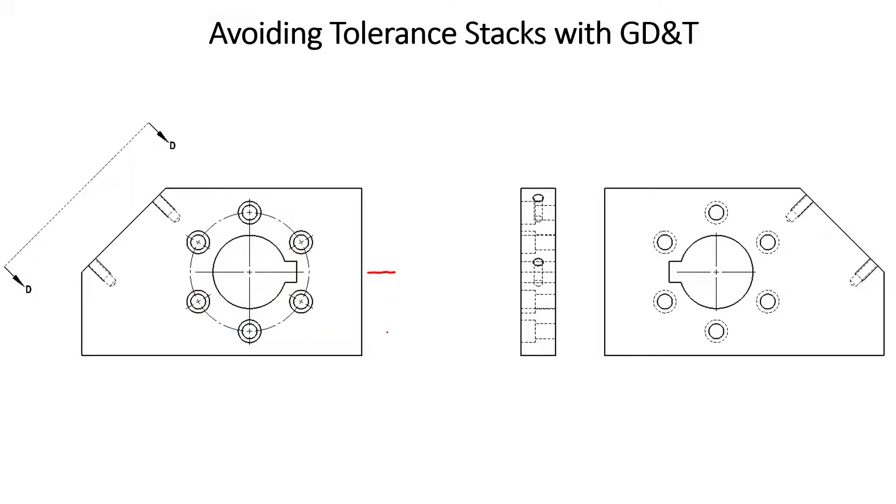What if we dimension the location of that bore to the center from the bottom with a plus or minus dimension? And we also locate the center of the bolt circle in the same fashion. We will also have to dimension the bolt circle itself with a plus or minus dimension. And lastly, we'll have to locate the bolt hole with respect to its adjacent bolt hole.